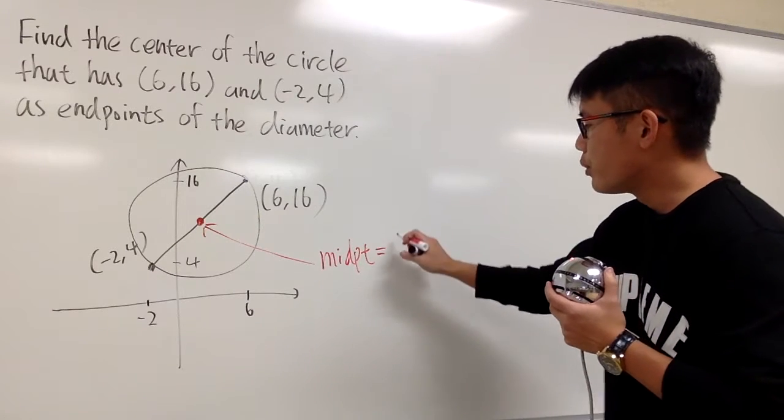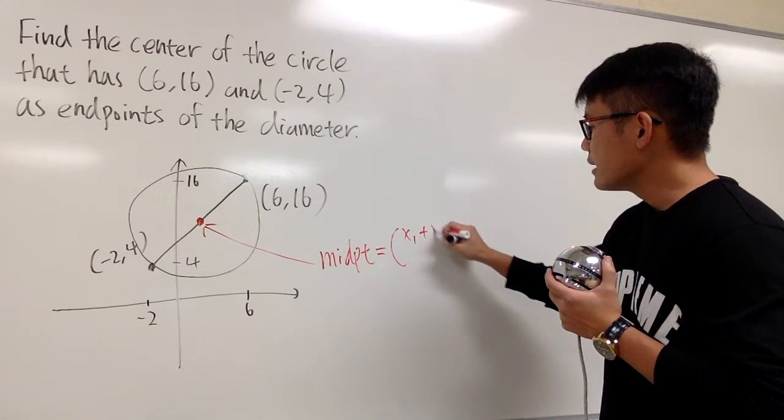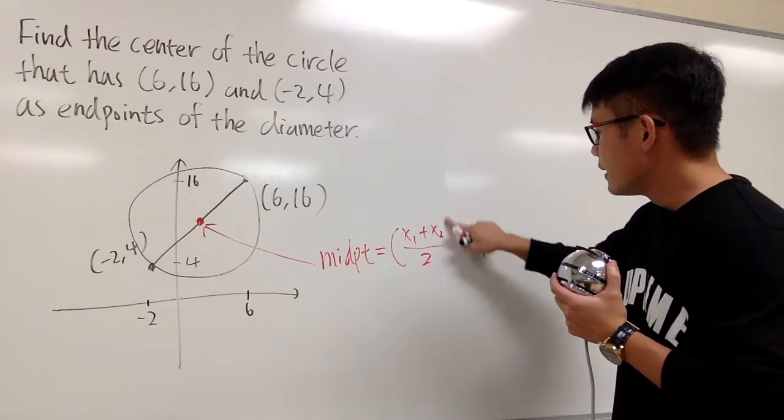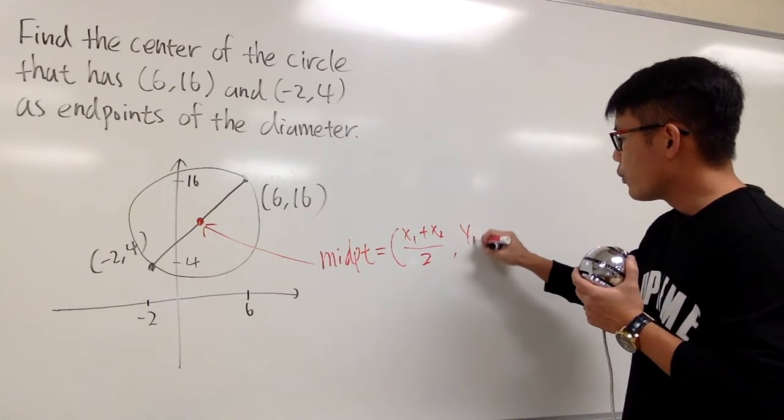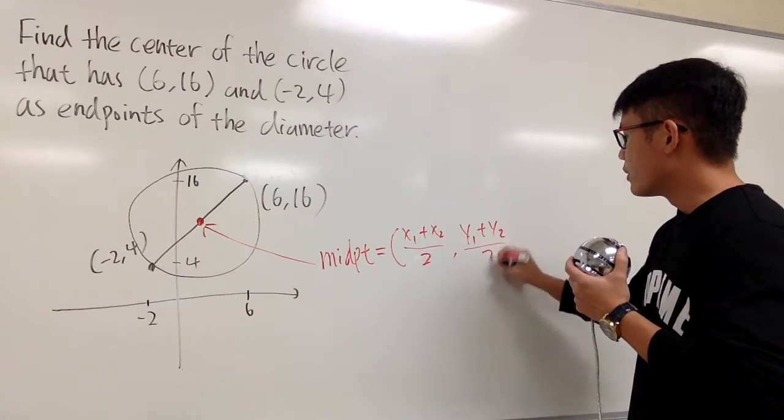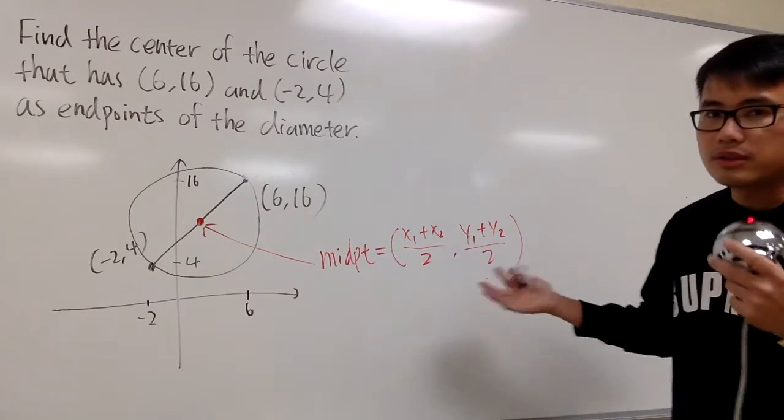And the formula for the midpoint is x1 plus x2 over 2, right? And then, the other is y1 plus y2 over 2. So, all in all, this is all we have to do.